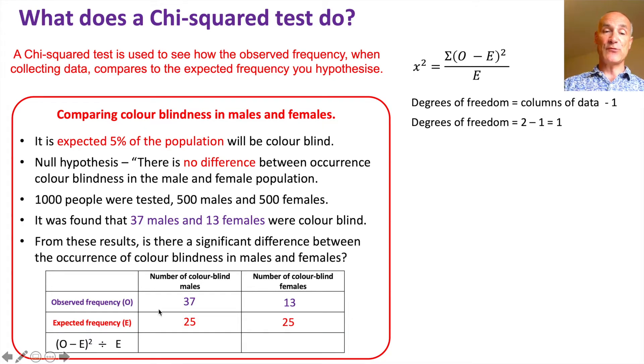So next step is working out this row here, which is our (observed minus expected)² divided by E. For the males we have 37 as observed minus 25 as expected, square that, divide by the expected 25, gives us 5.76. If you do the same with the females, believe it or not, quite a coincidence, but we get exactly the same value because the difference between 37 minus 25 is the same as the difference between 13 and 25. But that's not always the case.